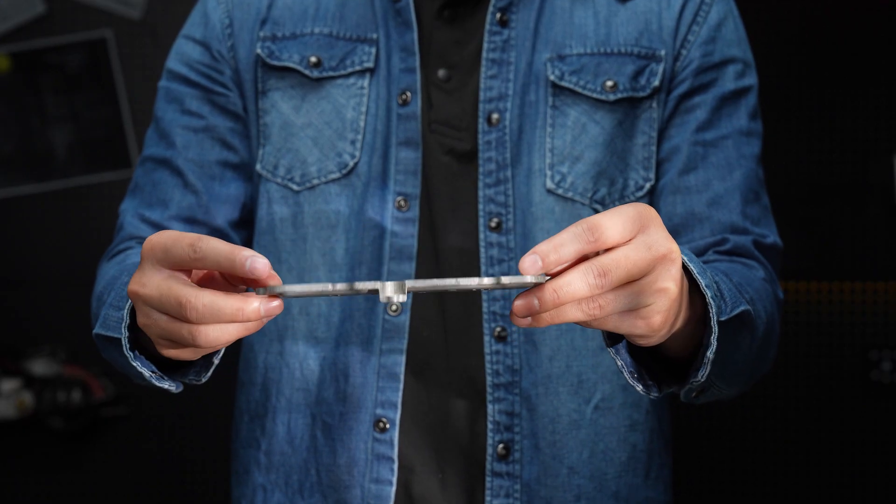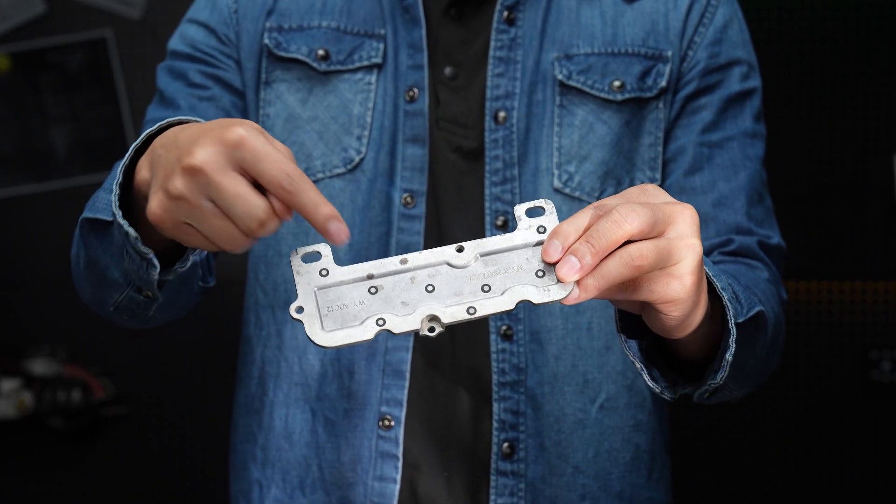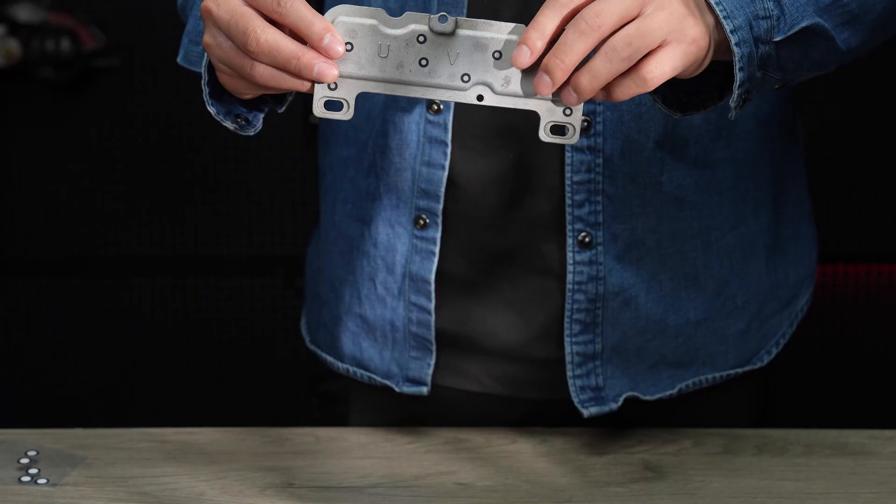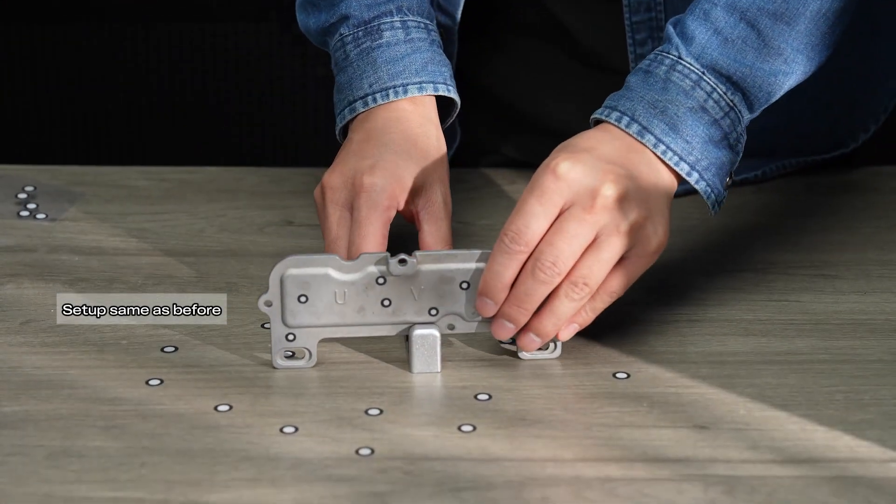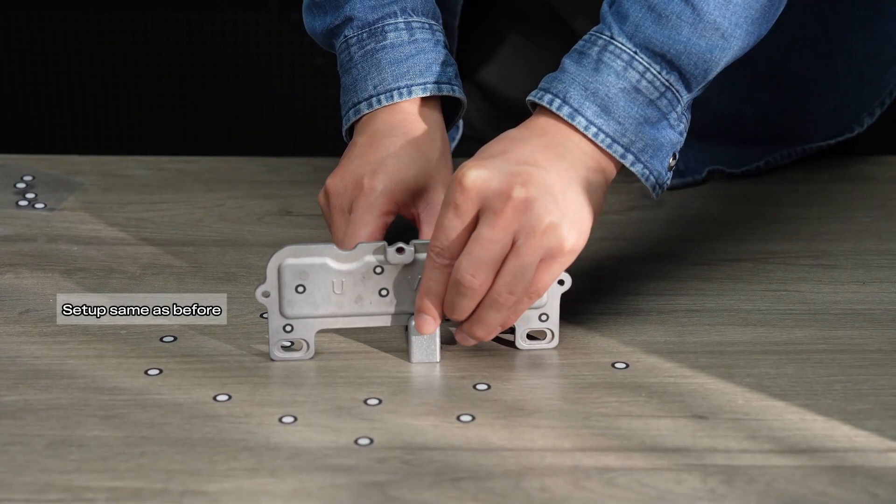Method 2. The second method requires two separate scans and then aligning the results. First, place the part vertically on a marker-covered platform, just like before.